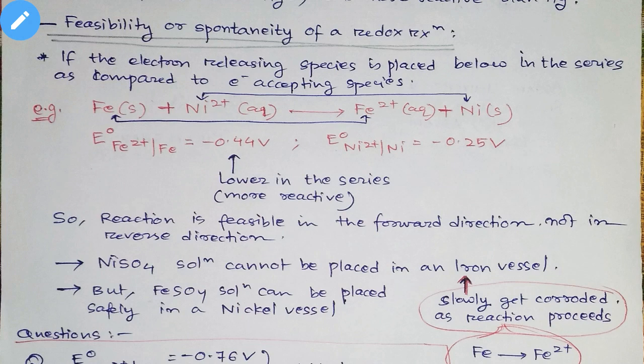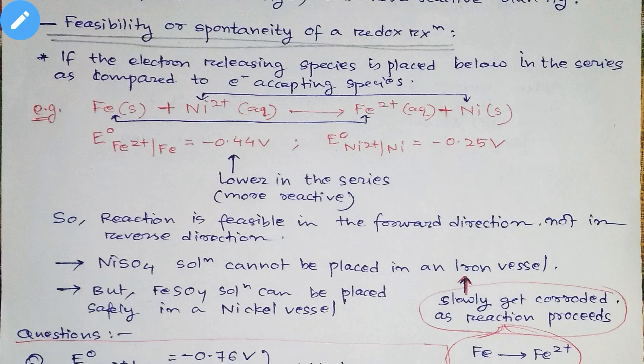The metals placed below hydrogen in the electrochemical series are more reducing in nature. They can easily donate electrons to other metals — they can release their electrons more easily. Those elements placed below hydrogen in the electrochemical series can easily donate electrons and can undergo oxidation.